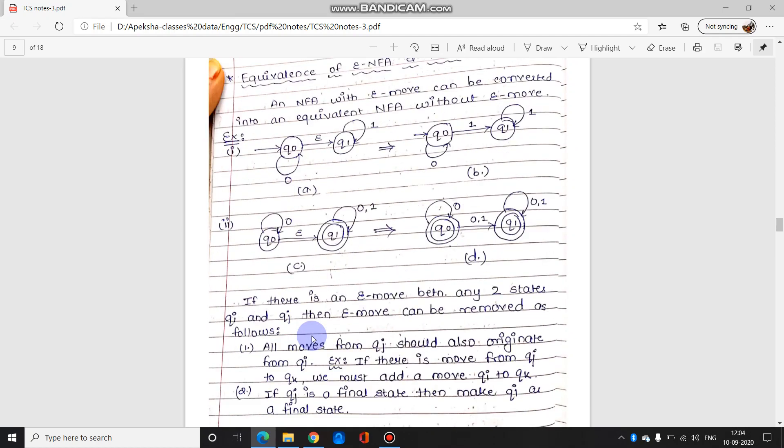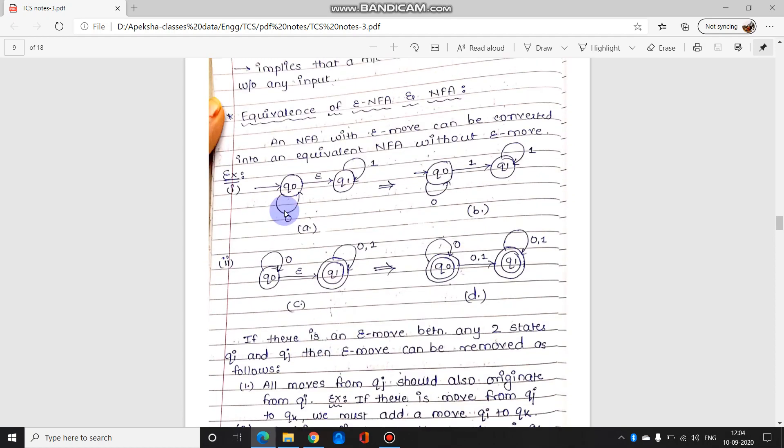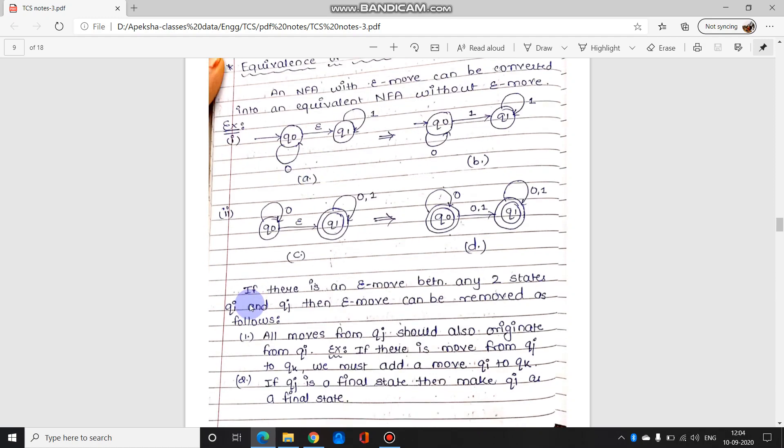Let us see that. Equivalence of Epsilon NFA and NFA. If there is an Epsilon move between any two states QI and QJ, then E-move can be removed as follows. There are two steps that we can remove it.